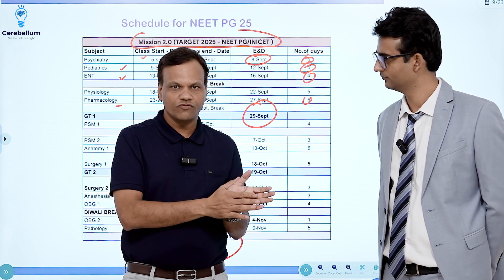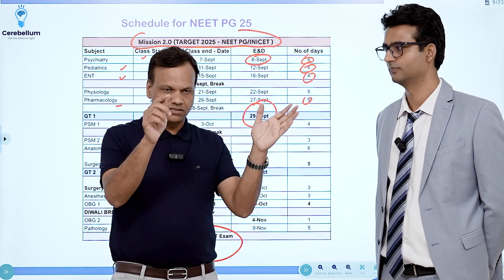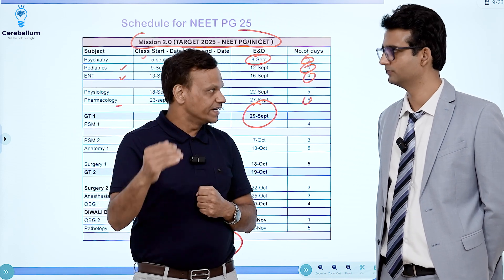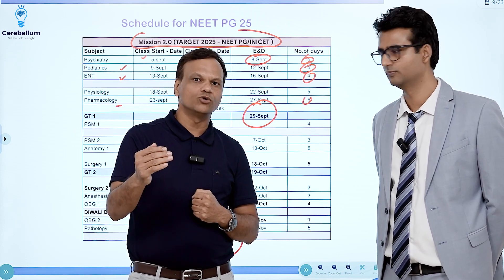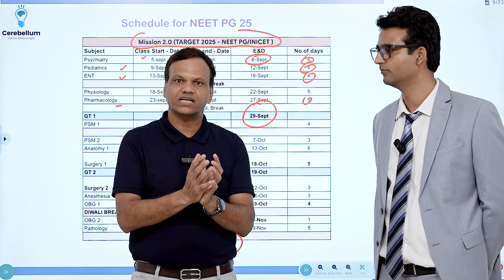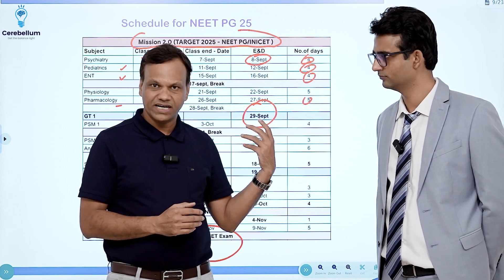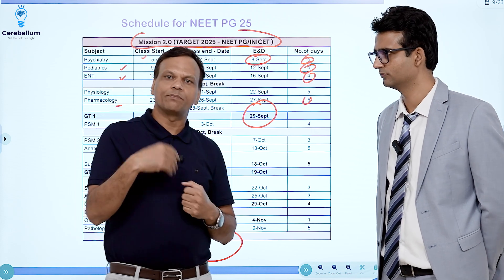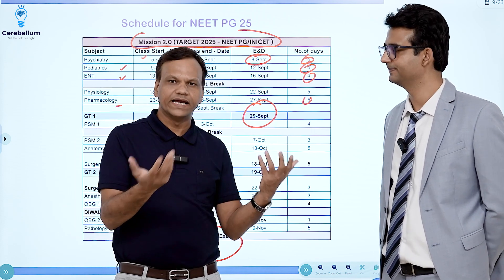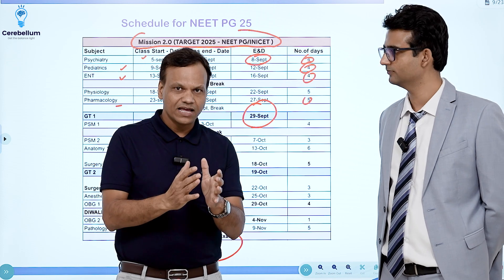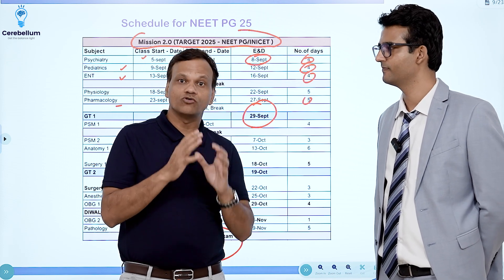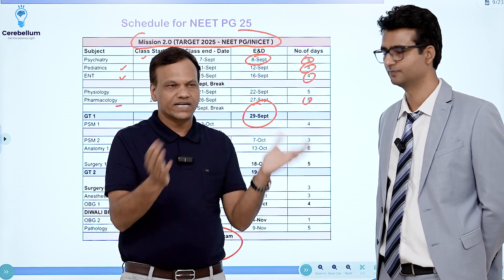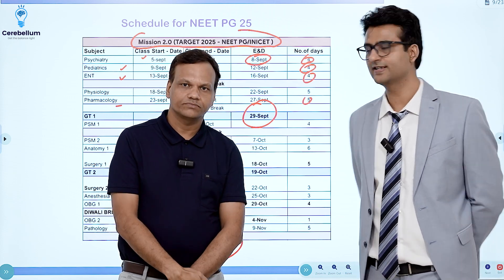The next day, attend the lecture again and follow the same routine. Once the subject is over — maybe in four or five days depending on the time given — before the end test, complete the same subject from the BTR. In BTR you can quickly revise everything. Appear for the test, the teacher will discuss it, and you will identify which areas remain a little weaker. Work on those, and your subject is complete.